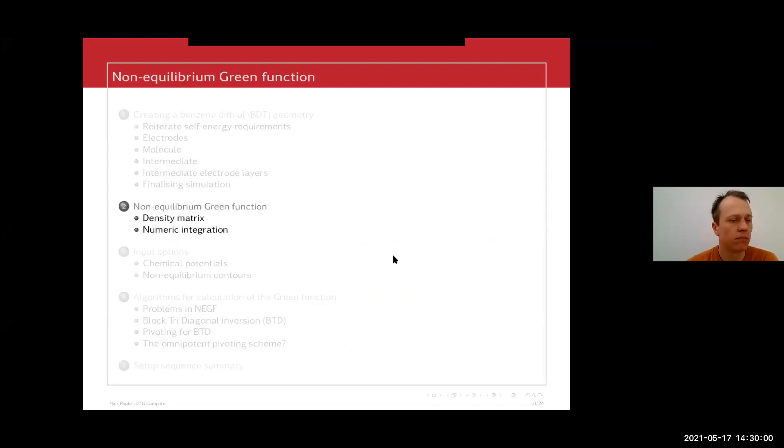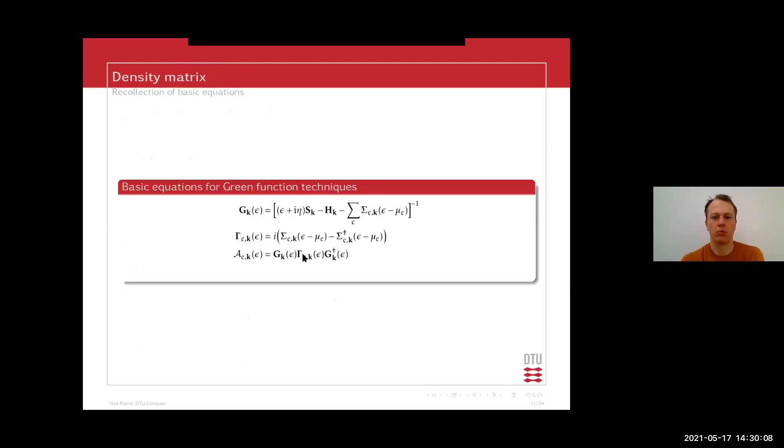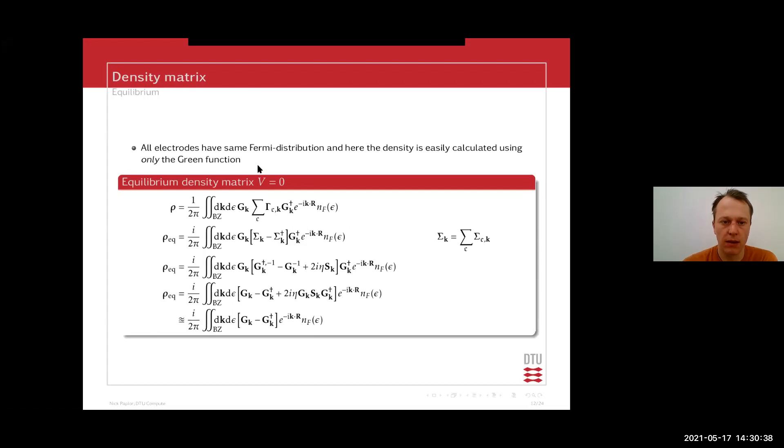Let me get back to how we calculate the density matrix in the TranSIESTA scheme, because that's also important for the numerical details and how the performance of TranSIESTA. So here, just a small quick recap. We have the Green's function, which is the inversion of a big matrix. We have the scattering matrix, which is a dense matrix, and then we have the scattering states here, or the spectral function here. If all the electrodes have the same Fermi distribution, then we can easily calculate the density using only the Green's function, and the derivation looks like this. The total density is the sum of all the spectral functions for all the electrodes, but you can manipulate this into a very simple equation.